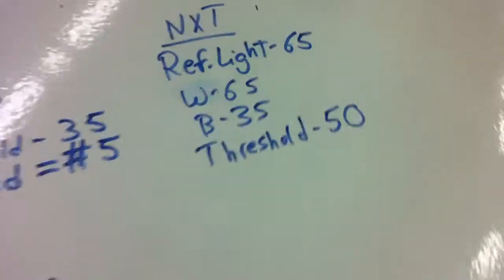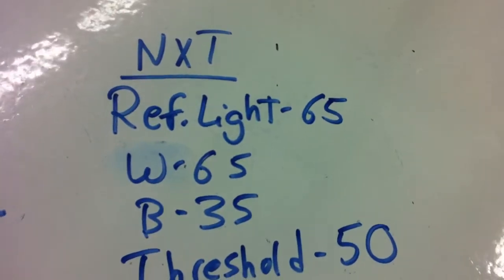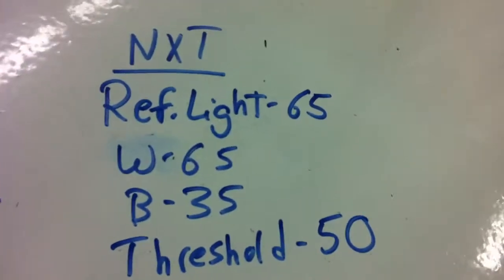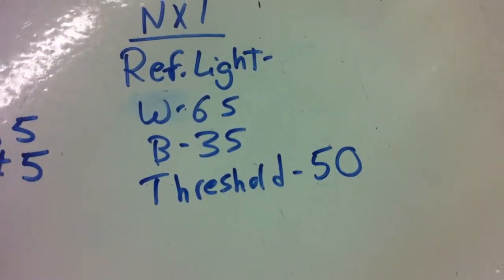Did some quick calculations. The NXT light sensor gave me reflective light of 65 for white, 35 for black, and therefore we put our threshold at 50.